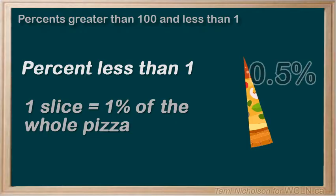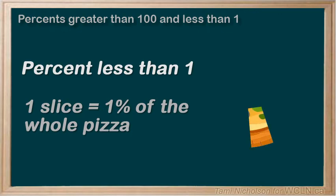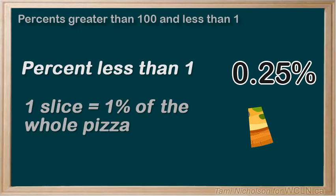A half as a decimal is 0.5, so that would be 0.5% of the pizza left. Let's say you ate more of this last slice, and now there's only a quarter of it left. One quarter is equal to 0.25 as a decimal, so you would have 0.25% of the pizza left.